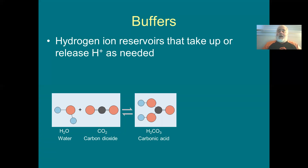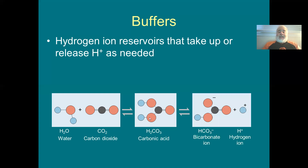Once you have carbonic acid in a water solution, some of that carbonic acid will give up a hydrogen ion. That's why we call it an acid — something that, when put in water, comes apart giving up hydrogen ions, increasing the hydrogen ion concentration and making the water acidic. All three states are in equilibrium at once: water, carbon dioxide, carbonic acid, bicarbonate (carbonic acid minus a hydrogen ion), and free hydrogen ions.